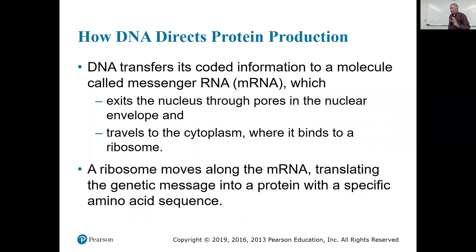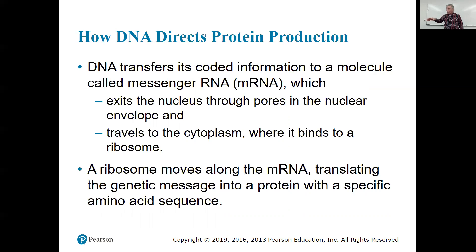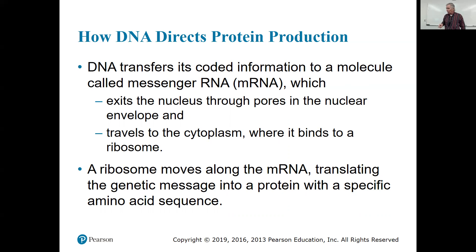DNA transfers coded information to a molecule called mRNA. There's a molecule called RNA polymerase that makes an RNA copy of a gene in the nucleus, which then exits through pores of the nuclear envelope, travels to the cytoplasm, and attaches to a ribosome. Making that copy is called transcription. The ribosome then moves along the mRNA, translating the genetic message into a protein with a specific amino acid sequence — and that's called translation.